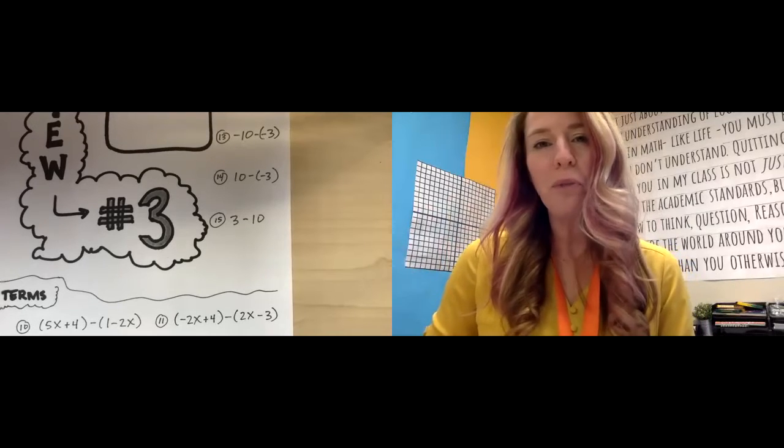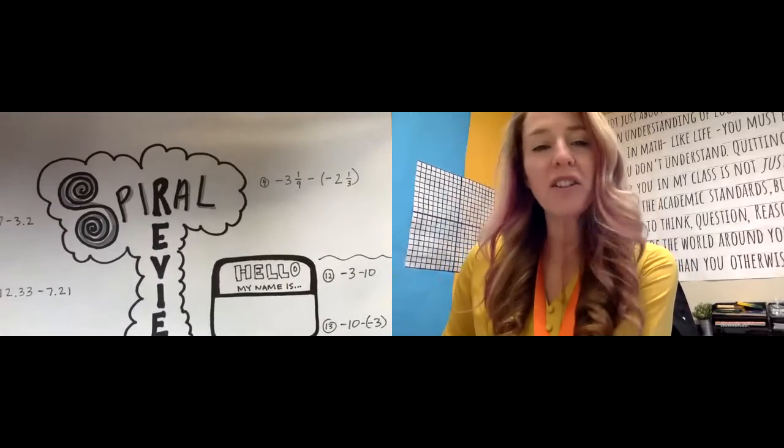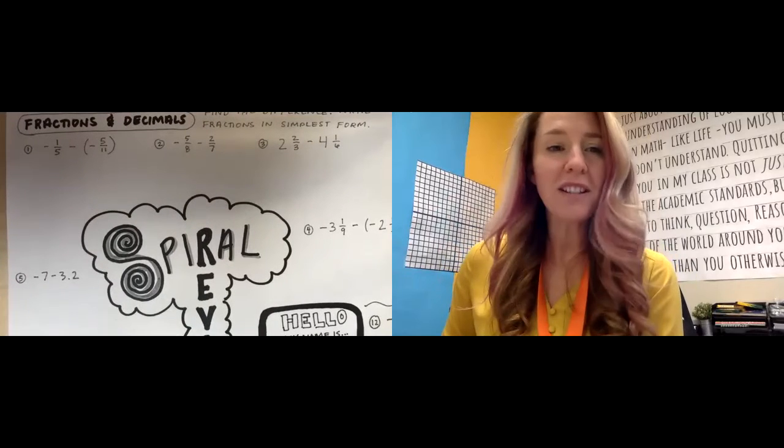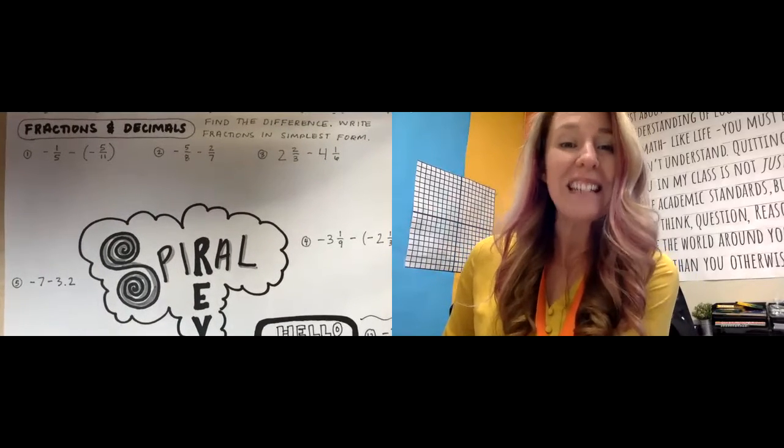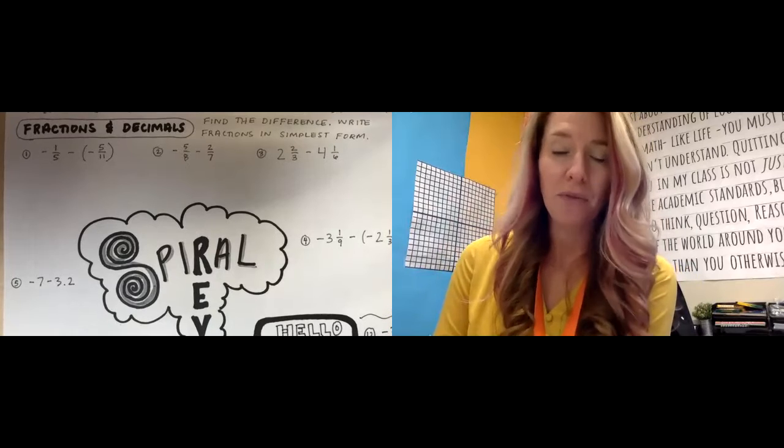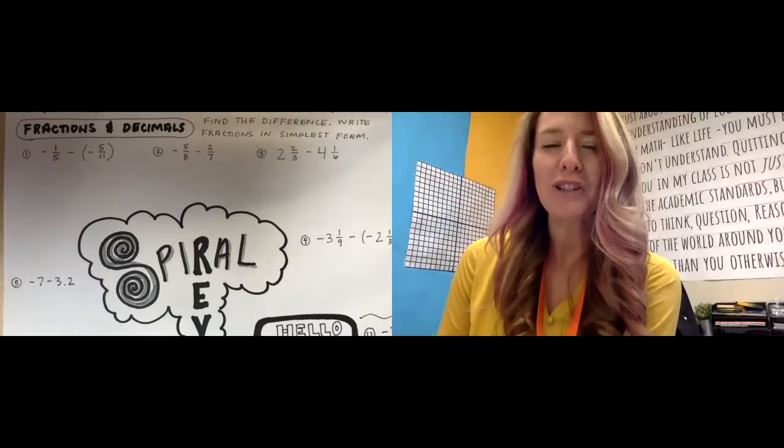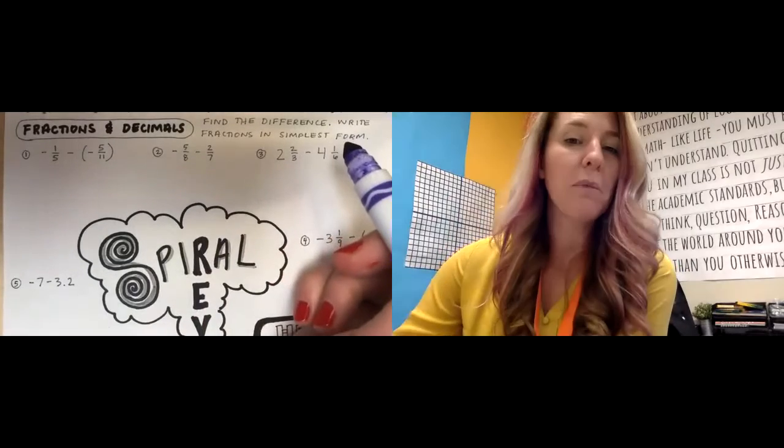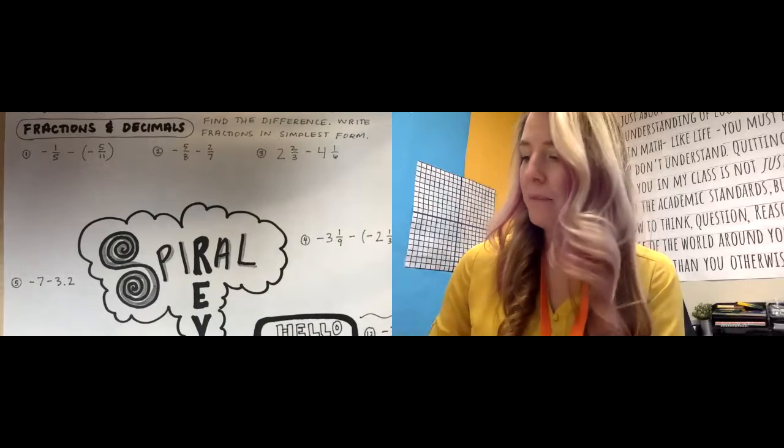All right. Spiral review number three for seventh grade. So let's get going here. The first thing on our spiral review for today is that we are doing fractions and decimals. As we work with fractions and decimals, it's important to look at the directions. First, it says find the difference, write the fractions in simplest form. So that's always a good reminder to double check those directions. We need to find a difference, which is the answer to a subtraction problem, and then we are going to simplify if we can.